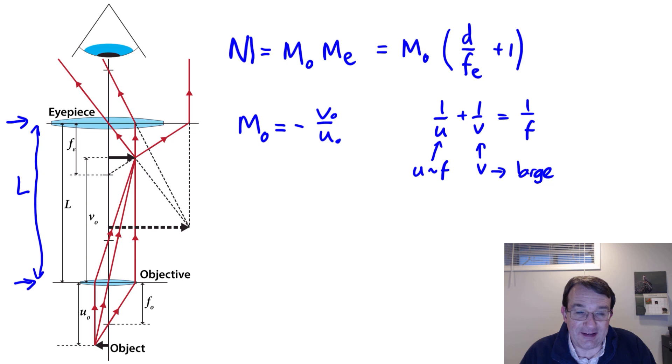The limit on this is it still has to fit inside the tube, so v is going to be roughly equal to L, the length of the tube. It can't be longer than the length of the tube otherwise this eyepiece will not act as a magnifying glass.